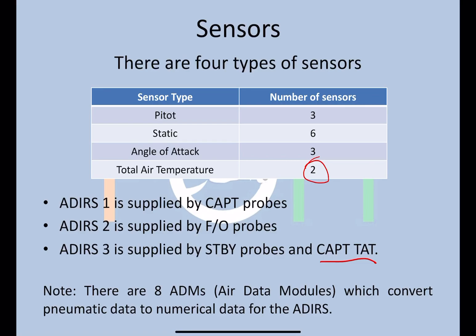The ADIRS does not understand pneumatic data directly — that is, pitot and static data. So there are eight ADMs (Air Data Modules) on this aircraft, which convert the pneumatic data into usable numerical data for the ADIRS.